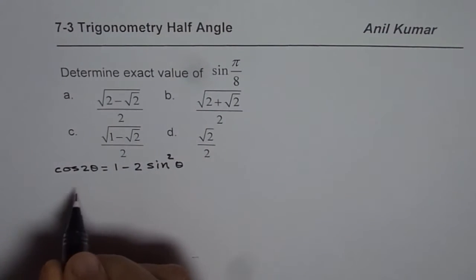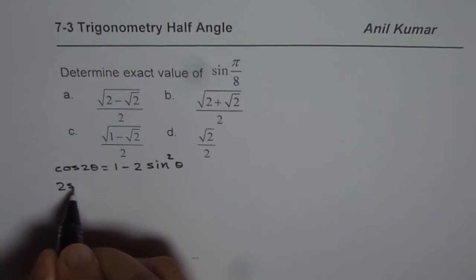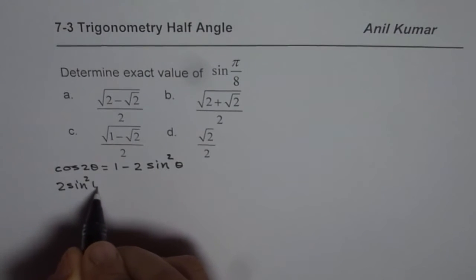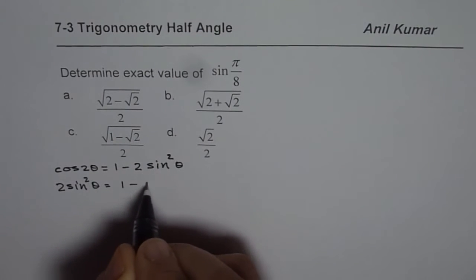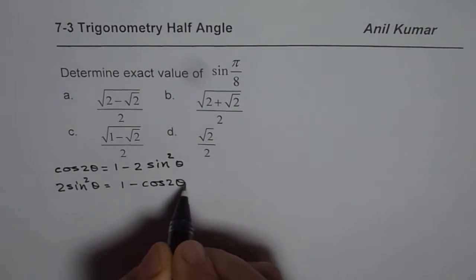Now we can rearrange it. So we get 2 sine square theta equals to 1 minus cos 2 theta.